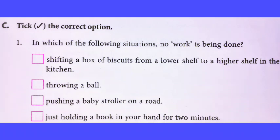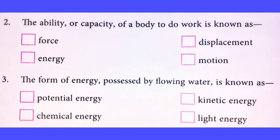Question number one: In which of the following situations no work is being done? The answer is: just holding a book in our hand for two minutes. Question number two: The ability or capacity of a body to do work is known as - the answer is energy.